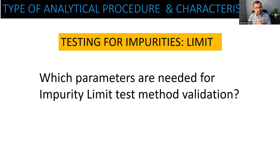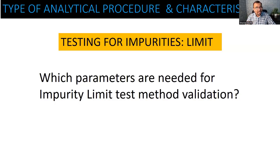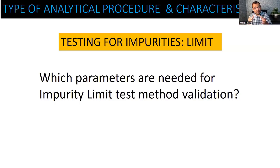You have to quantify something to understand the spread of the result. But in the limit test, you are only going to confirm within limit or out of the limit. If the limit is 10 ppm, you are not able to report it as 9 ppm or 8 ppm. You will only say 'below 10 ppm' or 'above 10 ppm'. That 'below 10 ppm' term is not quantitation — it is just a qualitative term.